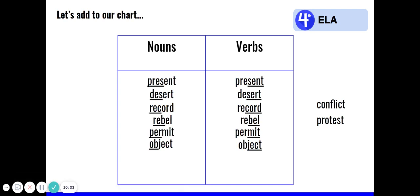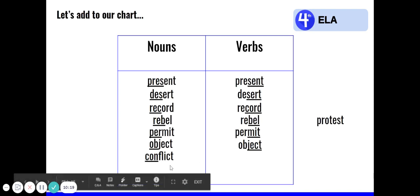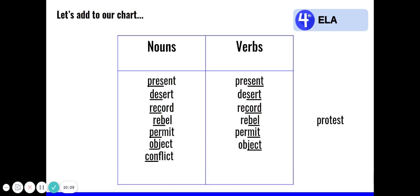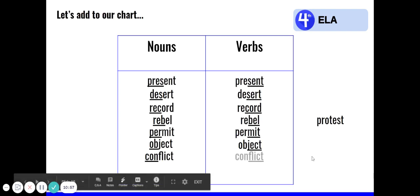Next, we have conflict. When I accent or stress the first syllable, con, in conflict, that means a serious disagreement or argument. This is a noun. And I'm going to write it under the nouns column. And be sure to underline the con in conflict. Conflict. Now, when I stress or accent the second syllable, in conflict, conflict means to be incompatible or clash. So let's add that to our verb side. Be sure to underline the second syllable, flict in conflict.